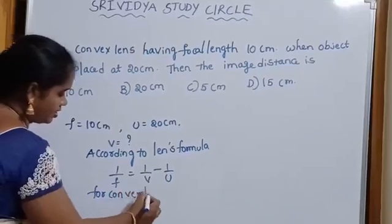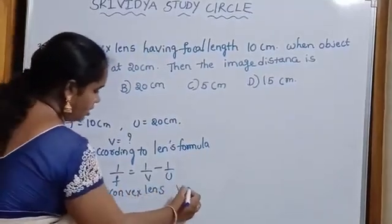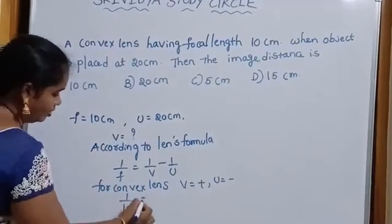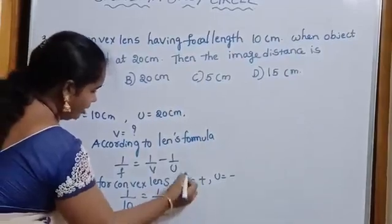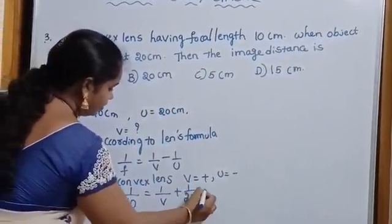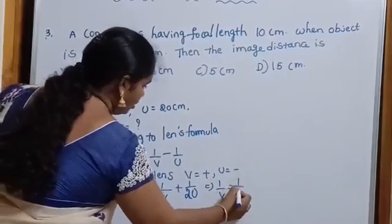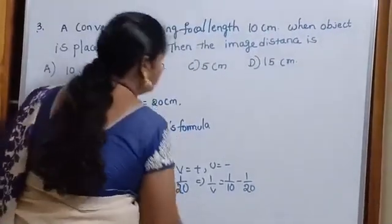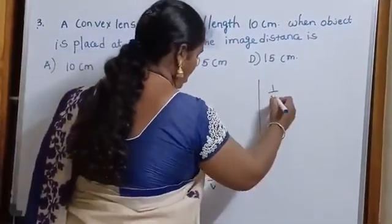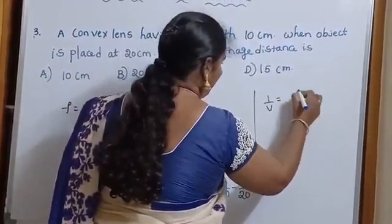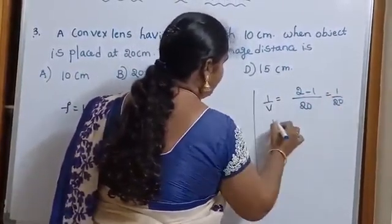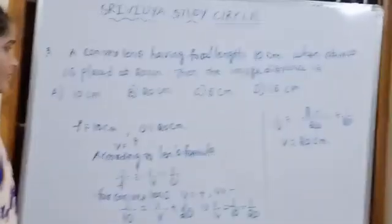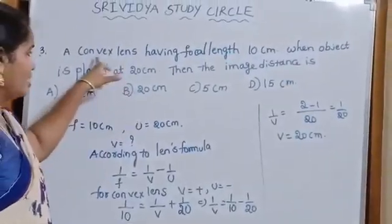For convex lens, V is equal to positive and U is equal to negative, then 1 by F value 10, 1 by V minus 1 by U value 20. We get 1 by V is equal to 1 by 10 minus 1 by 20. 1 by V is equal to, take LCM 20, 2 minus 1 is equal to 1 by 20, and V is equal to 20 cm. This is one method.